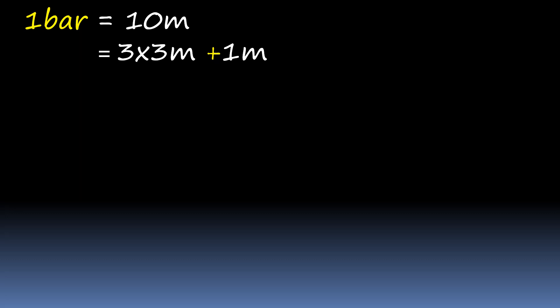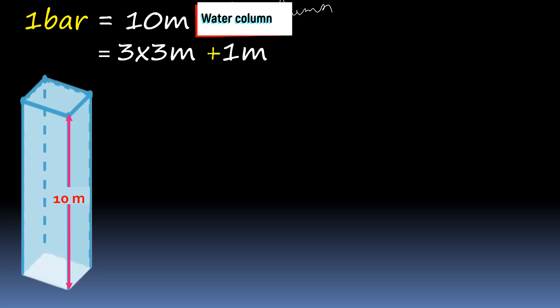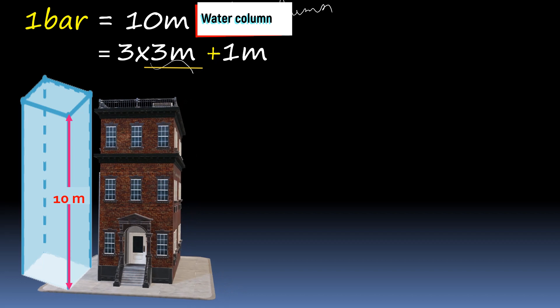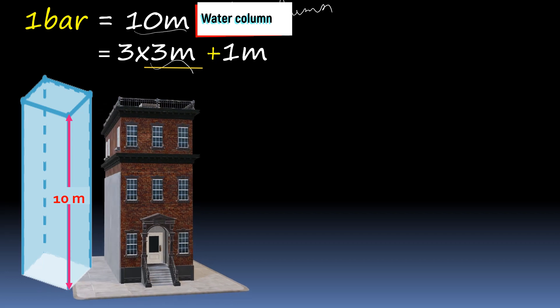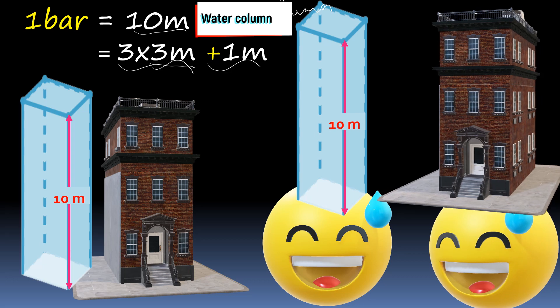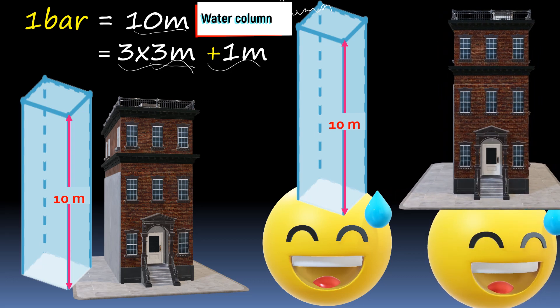We have established that one bar of atmospheric pressure is 10 meters of water column. We have also measured height of one story building, which is three meters. So 10 meters will be equivalent to three-story building with a one meter water triangle. So whenever there is one atmospheric pressure or one bar of pressure, you can consider it's 10 meters of water column, or you can consider you are carrying three stories of building consisting of water. This is how you can visualize one bar of pressure.